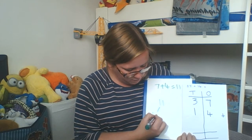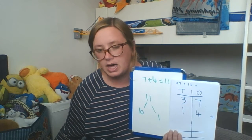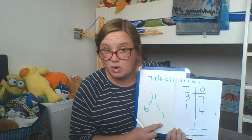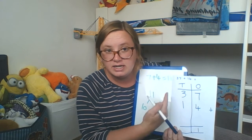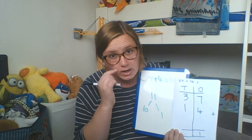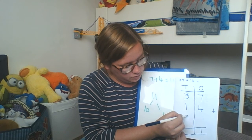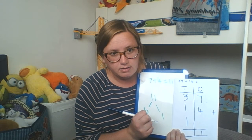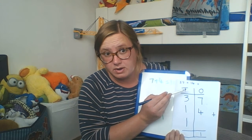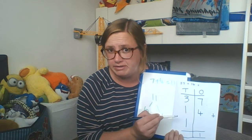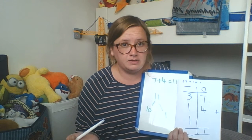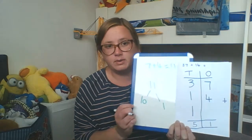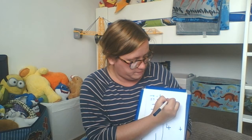11 is made up of 1 ten and 1 one. So what we're going to do is take the 1 one and put that into our ones column, and then exchange all of those other ones that make up 10 into 1 ten. Now we can move from our ones to our tens column and say: 3 tens add 1 ten add 1 ten — 3 tens add 1 ten is 4 tens, add another is 5 tens. So our answer is 51.